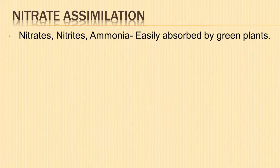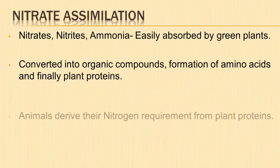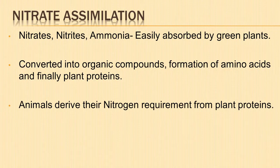Another process is nitrate assimilation. Inorganic nitrogen, after being converted into various forms like nitrates, nitrites, and ammonia, is easily absorbed by green plants. These are then converted into organic compounds, resulting in the formation of amino acids and finally plant proteins. Animals derive their nitrogen requirement from plant proteins, converting them into animal proteins.